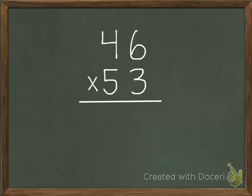We have two two-digit factors, and we need to find the product using the standard method. We begin with our 1's place value of our bottom factor, and we multiply that times each digit in our top factor.